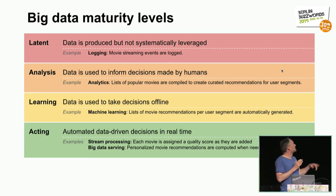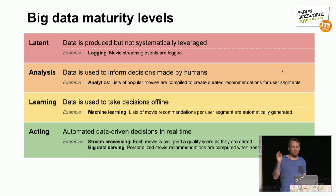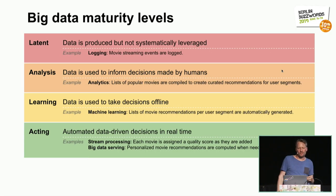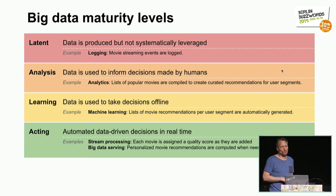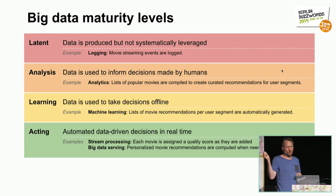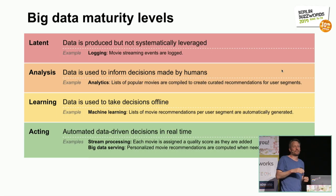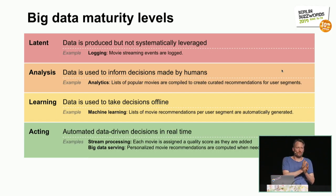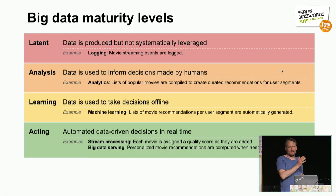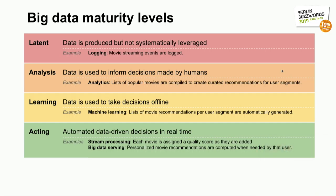A simple example is something like Netflix. At first, maybe you just serve movies and log which users watch which movie. Then you go to the analysis stage and do analytics to discover what kinds of users watch what movies, so you can create curated recommendation lists. At some point, you start using machine learning to create those lists offline — on Hadoop or something — generating recommendations for different kinds of users, moving them to your serving system, and serving them. The last stage of the acting phase is deferring the recommendation decision to the point where the user actually needs it.